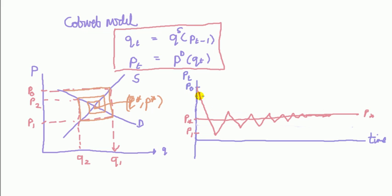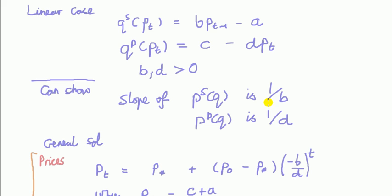So Cobweb model is a dynamic model of equilibrium. It explains how prices and quantity reach an equilibrium point. But it doesn't mean that this model is applicable always. It doesn't always hold. And we're going to see an example of this later on.